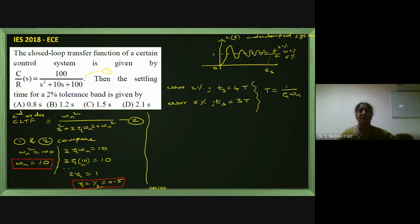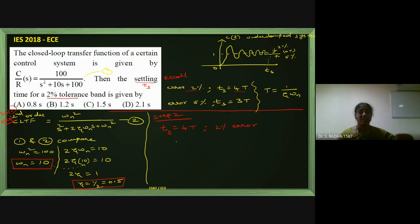They have asked for the 2% tolerance band settling time Ts. For 2% error, settling time is 4 time constants: Ts = 4T = 4/(η·ωn). Substituting η = 0.5 and ωn = 10: T = 1/(0.5 × 10) = 1/5, so Ts = 4 × (1/5) = 4/5 = 0.8 seconds.